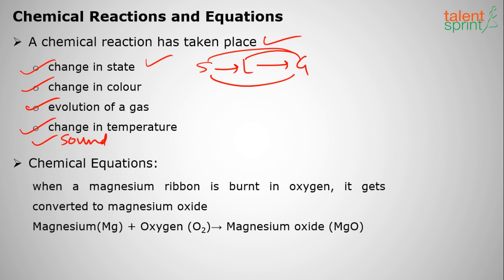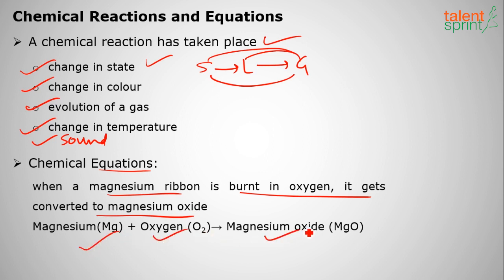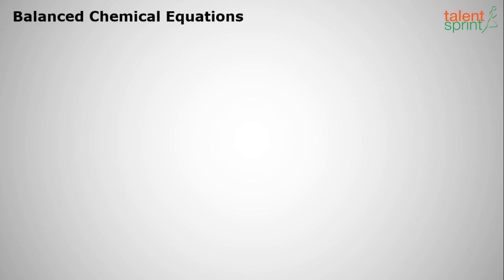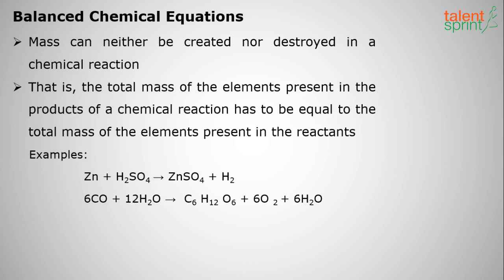A chemical equation can be written whenever there is a chemical reaction. For example, magnesium ribbon is burnt in the presence of oxygen and gets converted into magnesium oxide: Mg + O₂ gives MgO. We can balance this as: 2Mg + O₂ gives 2MgO.